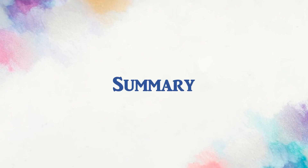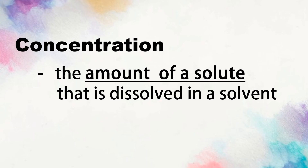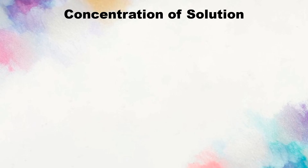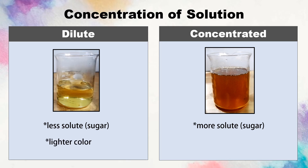Let us sum up. Concentration of solution is the amount of a solute that is dissolved in a solvent. It can form dilute solution and concentrated solution. Dilute solution has less solute or sugar and more solvent. Concentrated solution has more solute or sugar for a certain amount of solvent. The color of dilute solution is lighter than concentrated solution, and the color of concentrated solution is darker than dilute solution.